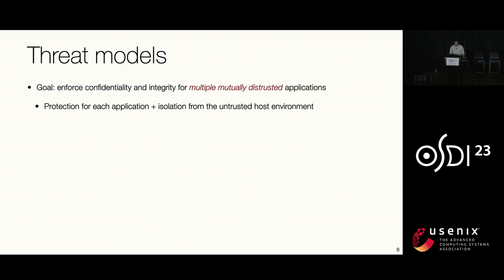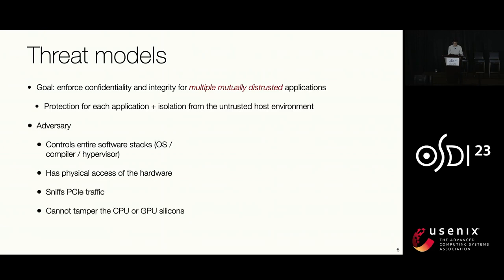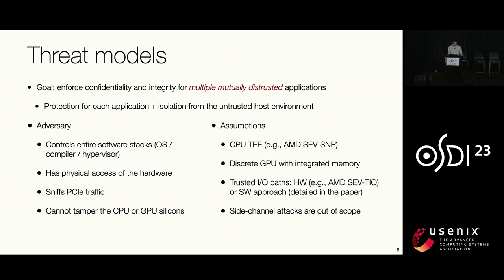The goal of Honeycomb is to ensure confidentiality and integrity for multiple mutually distrusted applications, offering protection and isolation from the untrusted host environment. We assume the adversary can control the entire software stack and have physical access to hardware, but cannot tamper with the GPU or CPU silicon. Honeycomb assumes a CPU TEE — our implementation relies on AMD SEV-SNP, though the same idea applies to Intel TDX. It also assumes a discrete GPU with integrated memory and a trusted IO path. Side-channel attacks are out of scope.